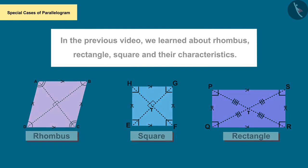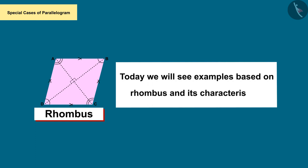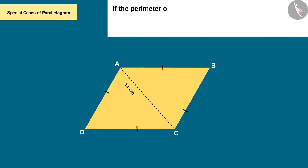Today we will see examples based on rhombus. If the perimeter of the given rhombus ABCD is 100 centimeters and the value of diagonal AC is 14 centimeters, can you tell the value of diagonal BD?